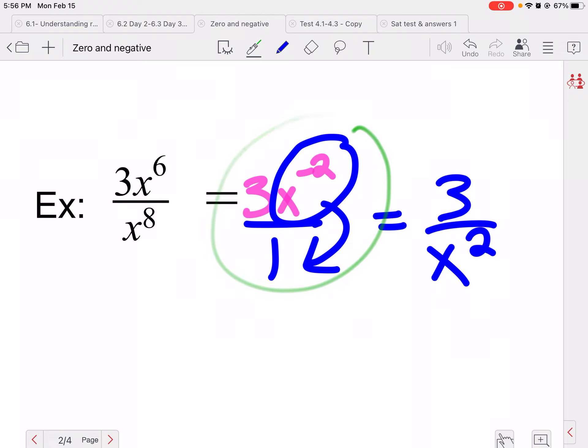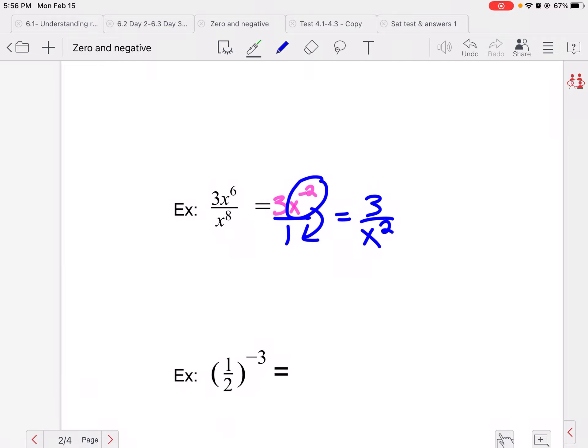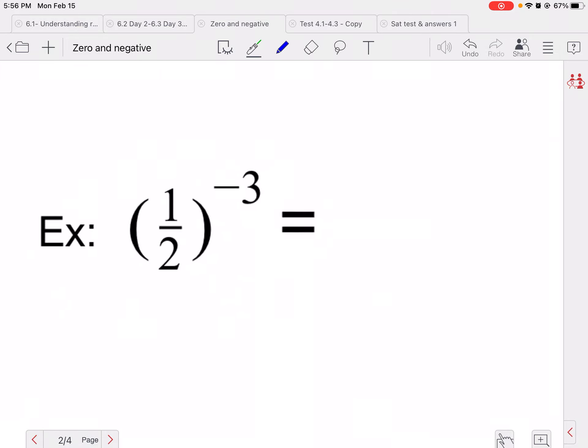Now, one little hint I can give you here is notice x to the sixth over x to the eighth. There was more x's in the denominator, and I could be like, well, I know the difference is two, so I can just leave the two in the bottom because I know it's going to stay where there are more x's. So you actually can skip this step if you want and just go right to here if you realize, well, there's more x's in the denominator, so my x's will stay down there. Up to you how you think about it.